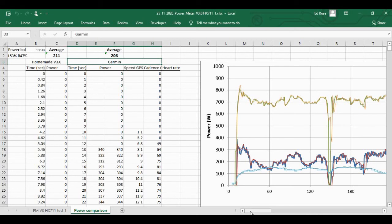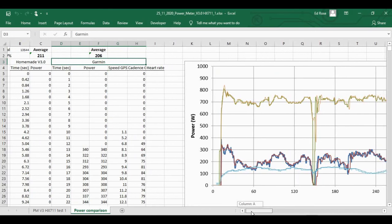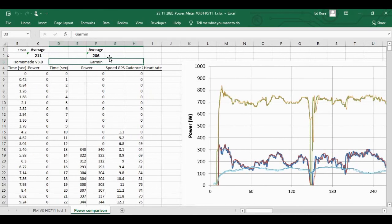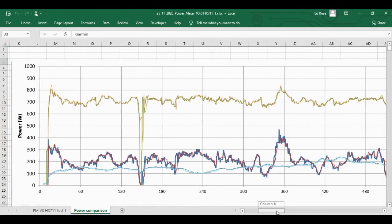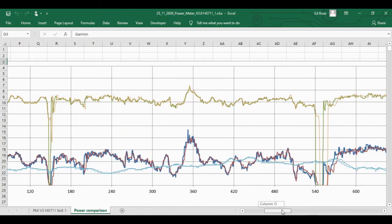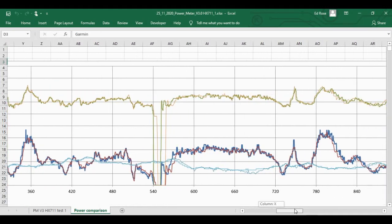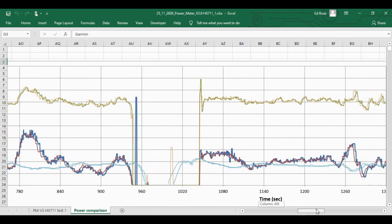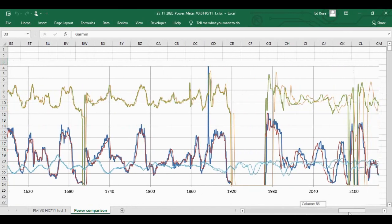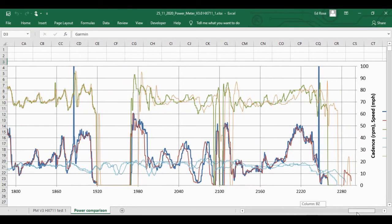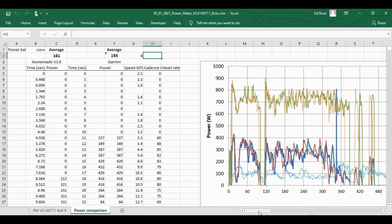So far I've recorded nine rides with this latest version and the data is looking very promising indeed. It's been consistently within about 10 watts of a proper power meter. Here's the power data - the red is the blue, blue is the homemade one, red is Garmin pedals, and I'm pretty pleased with the results. I did have a few issues with spikes caused by bumps in the road. A bit of smoothing has now fixed that.